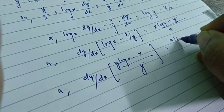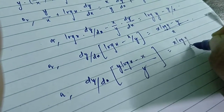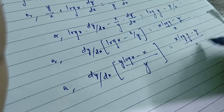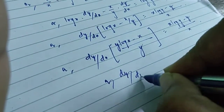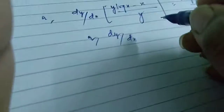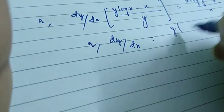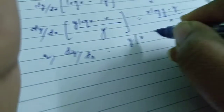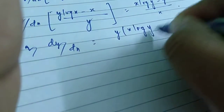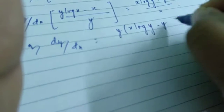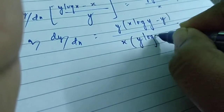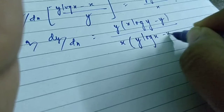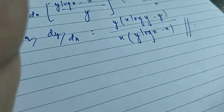The right hand side becomes x log y minus y over x. So finally, dy/dx equals y times (x log y minus y) divided by x times (y log x minus x). This is the required answer.